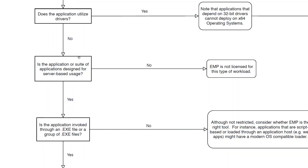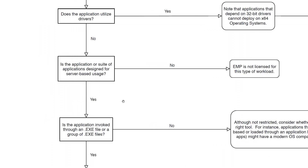If you don't have driver dependencies, check whether the application is designed for server-based usage. EMP licensing is available only for server-based solutions. If it is a desktop application, you cannot use this technology — EMP is not licensed for that type of workload. For example, if you have a desktop application you need to migrate into AWS Workspaces, that tooling cannot be used. However, if you have a WinForm application designed to run on servers, you should be able to move it to AWS with the licenses provided.